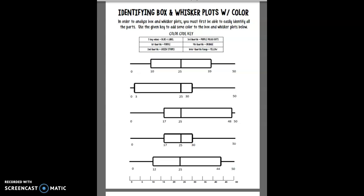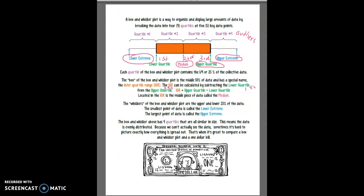So let me do that first. I have my five key values, they're all right here. One, two, three, four, five. So lower extreme, lower quartile or first quartile, median, upper quartile or third quartile, upper extreme.